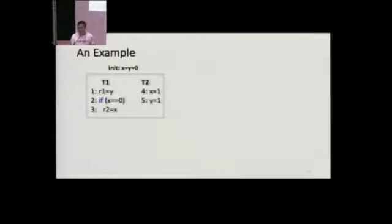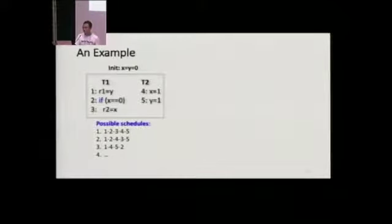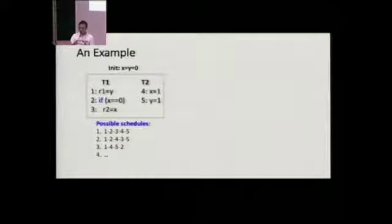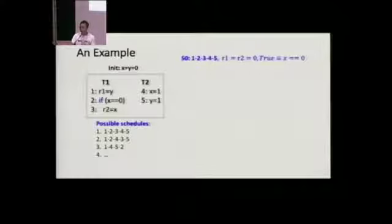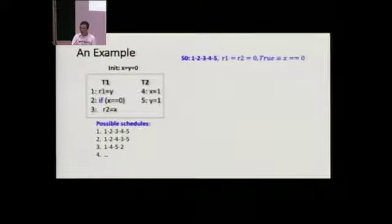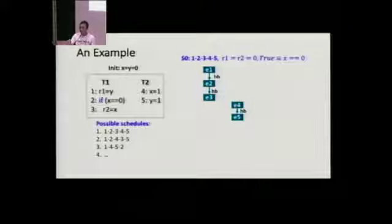Let's see a simple example of how MCR works. This program contains two threads, where X and Y are shared variables and all others are local. For this concurrent program it may contain lots of different schedules, like 1-2-3-4-5 or 1-2-4-3-5. The goal of MCR is to efficiently explore all possible interleavings. Suppose we execute the program along schedule 1-2-3-4-5, and we get program states R1 and R2 equal to zero. In this program, the if-predicate is evaluated to be true. We model the trace using abstract events to represent the corresponding statements in the program.